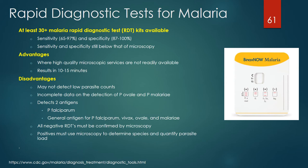RDT disadvantages include that they may not detect low parasite counts — not unusual for Plasmodium vivax, ovale, and malariae — and there is incomplete data on the ability of RDTs to detect Plasmodium ovale and malariae. RDTs generally detect two antigens: Plasmodium falciparum and one general antigen that detects the four major malarial organisms. All negative RDTs must be confirmed by microscopy. Positive tests must use microscopy to determine species and quantify the parasite load, which is important for clinical prognostic reasons.